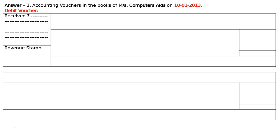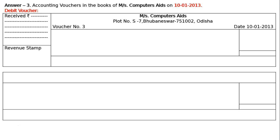In the next box below this is for revenue stamp. And in the first box next to it is the shop name — Messers Computer Aids — plot number S7, Bhubaneswar, 751002, Odisha. The date will be in the left side voucher number 3, and in the right side the date will be 10th January 2013. We will have to write down the amount and rupee symbol. The transaction is sold computer for cash — computer here is not an asset, this is a business dealing with computer sale and purchase. We sold computer, sold goods — we are getting cash selling goods. Hence cash is coming into the business.